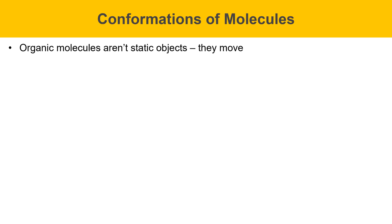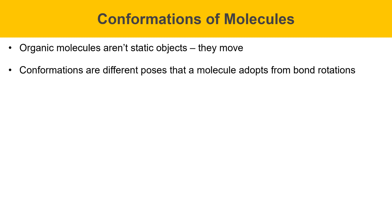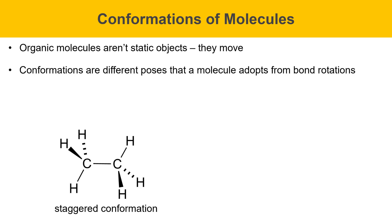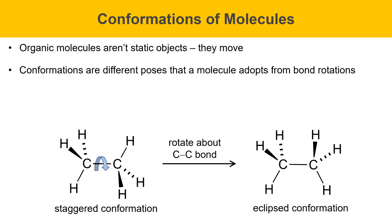Organic molecules aren't static objects — they move. Conformations are different poses that a molecule can adopt from different bond rotations. As an example, here's a 3D perspective drawing of ethane. This particular conformation is called staggered. If we rotate about the central carbon-carbon bond, we can put it into a different conformation — the eclipsed conformation. The eclipsed conformation can rotate back into the staggered conformation, and there's an equilibrium established between these conformations in ethane.